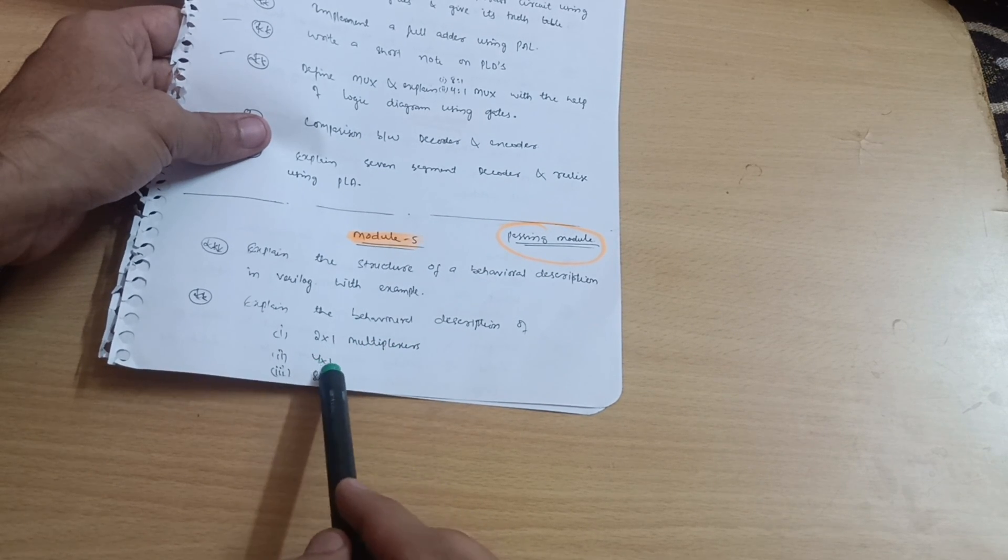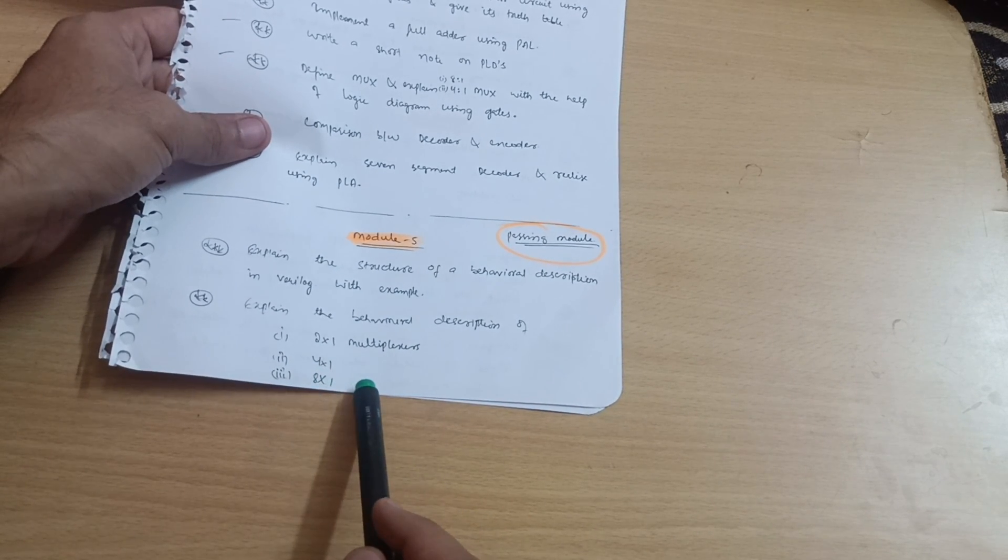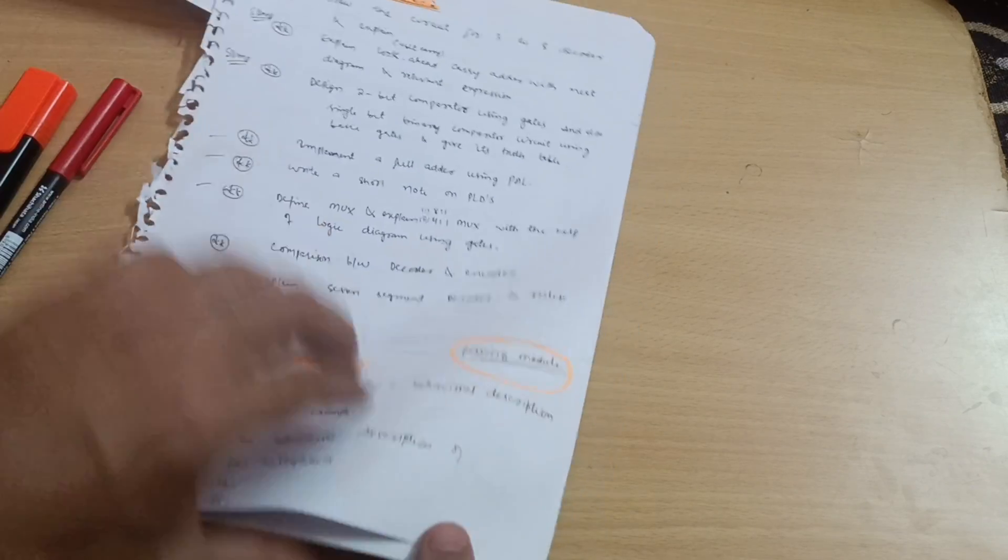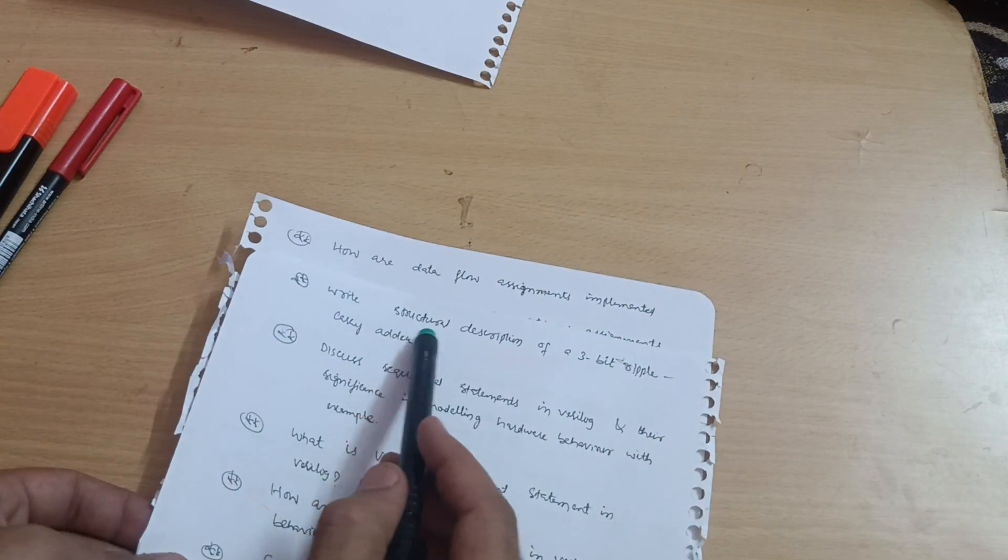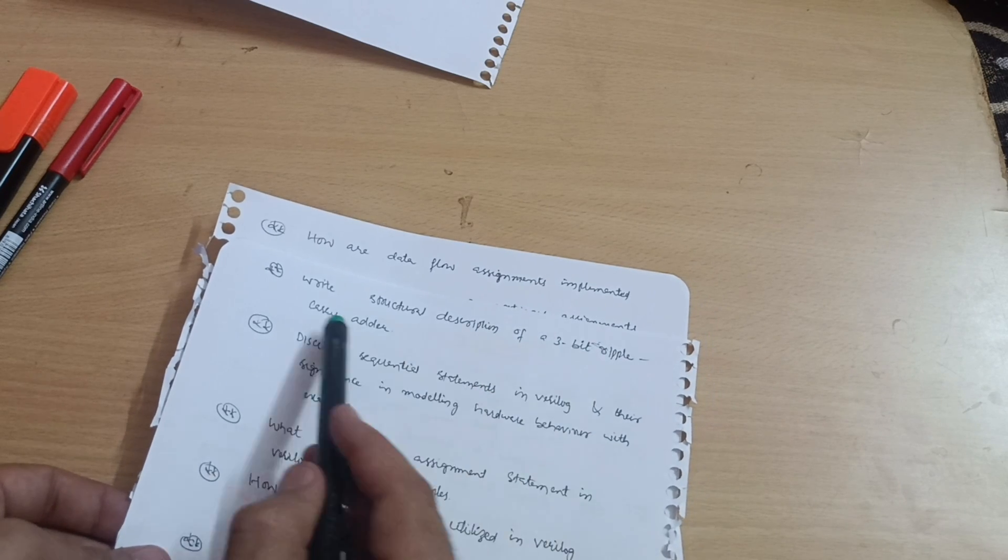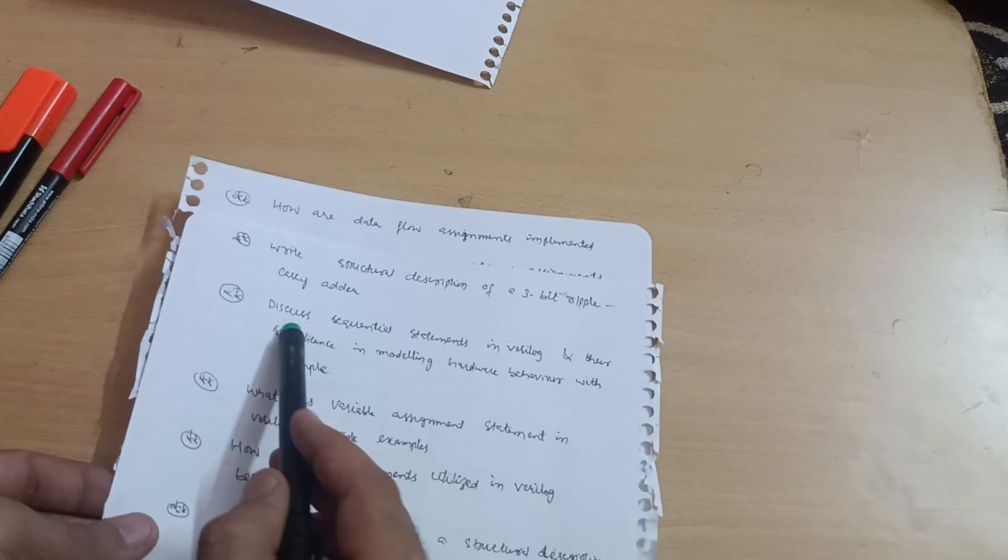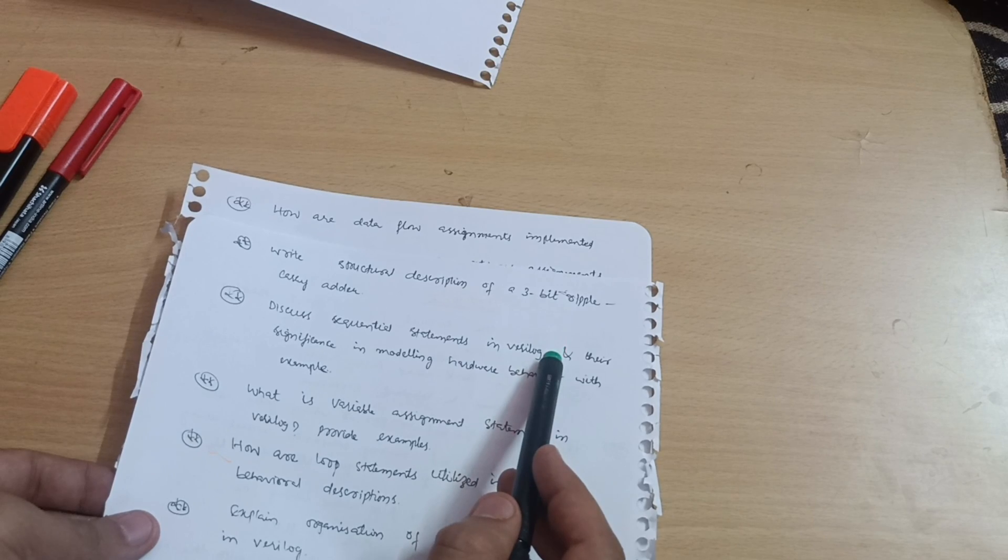Sometimes they will give 4-to-1 or 8-to-1 multiplexers. Next is write structural description of a three-bit ripple carry adder. Most important one.